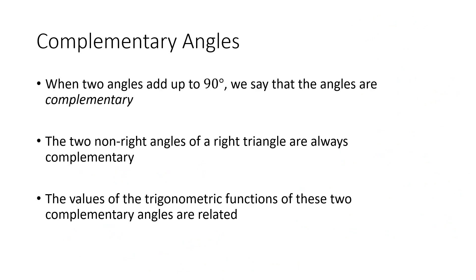Another way to relate together the different trigonometric functions is by talking about complementary angles. A quick note: there's a very similar word in English, 'complimentary' with an I, and that's when you say something nice about somebody — when you pay someone a compliment. That's a different word. Complement means two things that fit together, like peanut butter and chocolate. When two angles add up to 90 degrees in mathematics, we call those angles complementary.